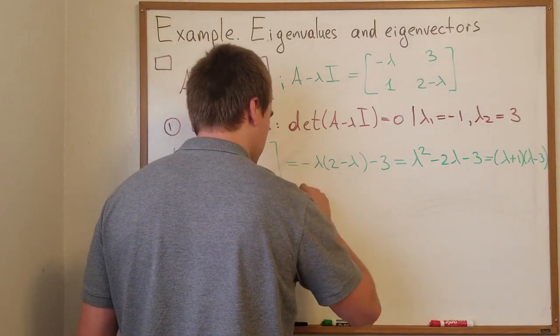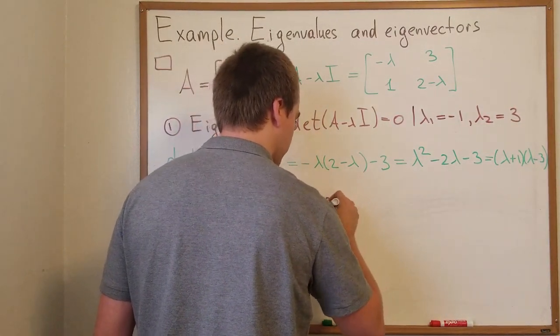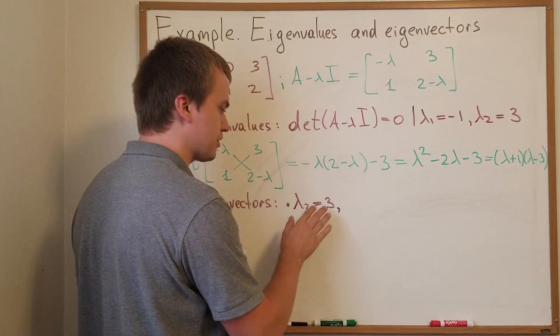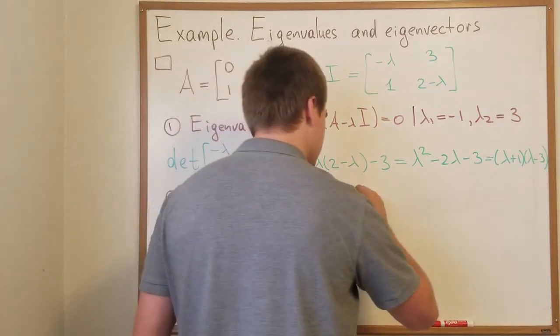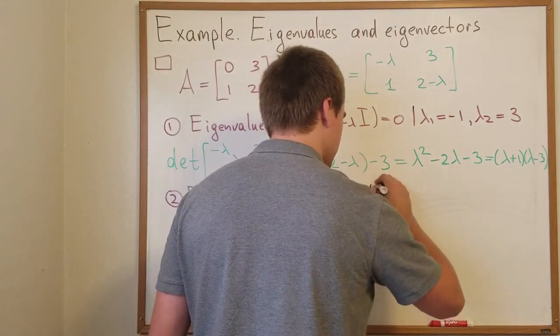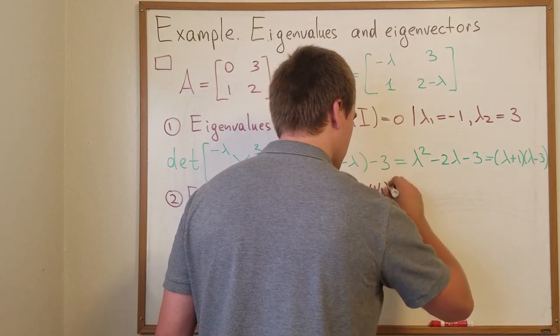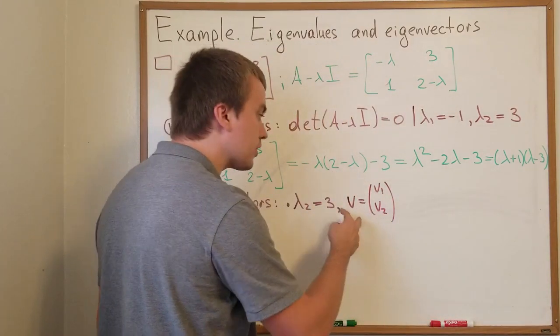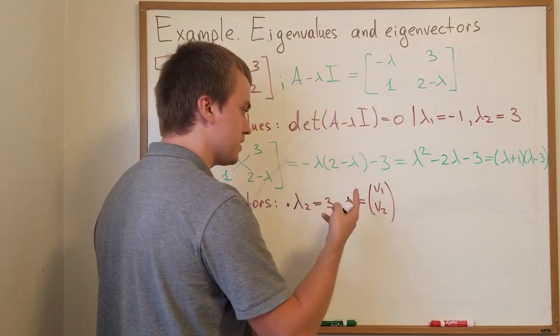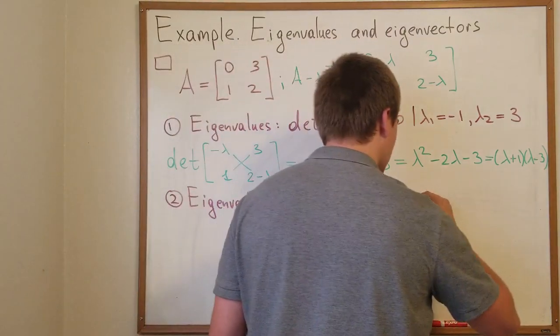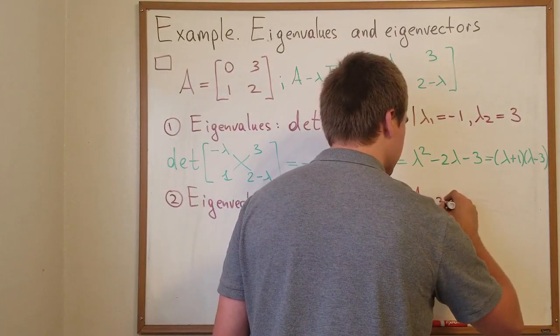And let's first choose lambda equals to 3. We want to find the corresponding eigenvector to this eigenvalue. So let's say that we have some vector v with entries v1 and v2. And v is going to be eigenvector if v is going to lie inside the nullity of this matrix A minus 3I.